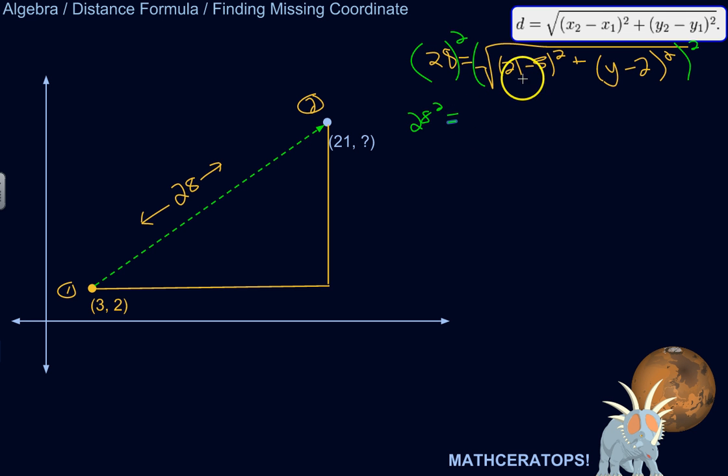And I can just type in 28 squared is equal to, okay, now while we're at it, I'm going to do 21 minus 3 as 18. So 28 squared equals 18 squared. I'm just going to leave it as 18 squared instead of doing that out just to keep things tidy. So I'm going to leave it as 18 squared plus y minus 2 squared.